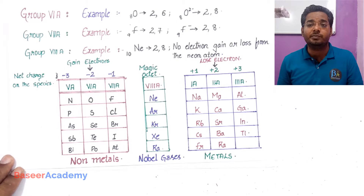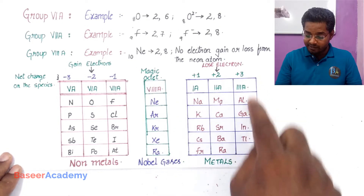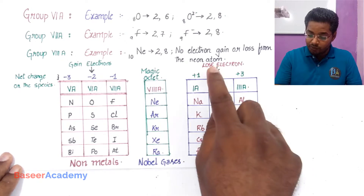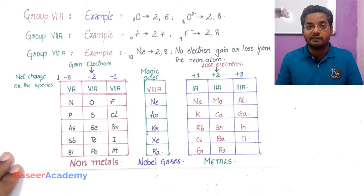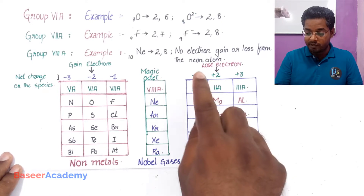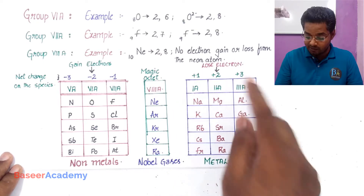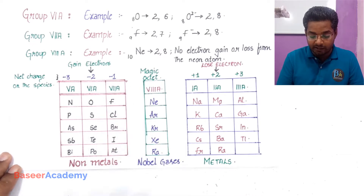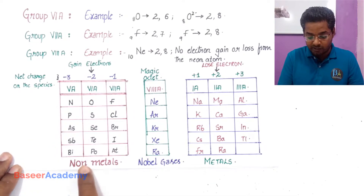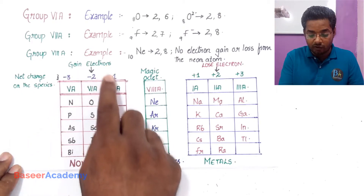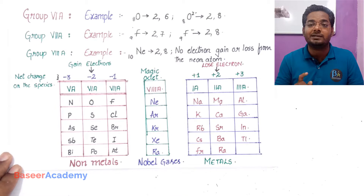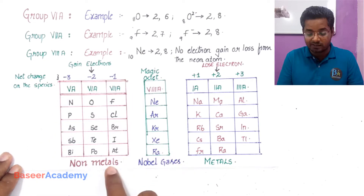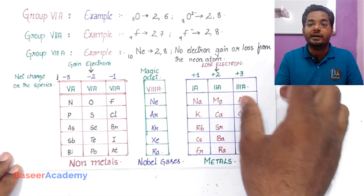In the previous video we saw that the elements on the left-hand side of the periodic table belonging to group 1A, 2A, 3A, which are mostly metals, they tend to lose electrons and form positive ions. Positive ions are known as cations. This property of losing electrons to form positive ions is known as metallic character or electropositive character. Elements on the right-hand side belonging to group 5A, 6A, 7A, which are mostly non-metals, they tend to gain electrons to form negative ions, known as anions. This property of gaining electrons to form negative ions is known as non-metallic character or electronegativity.